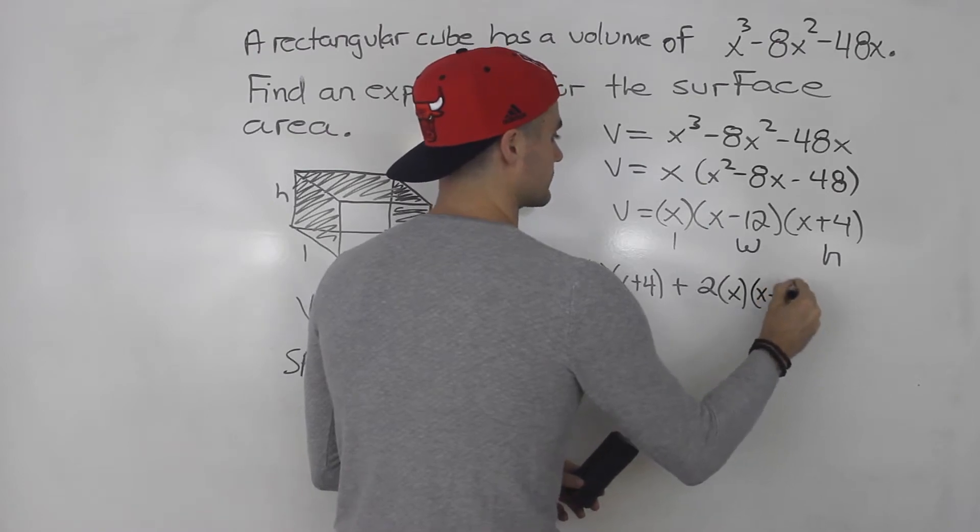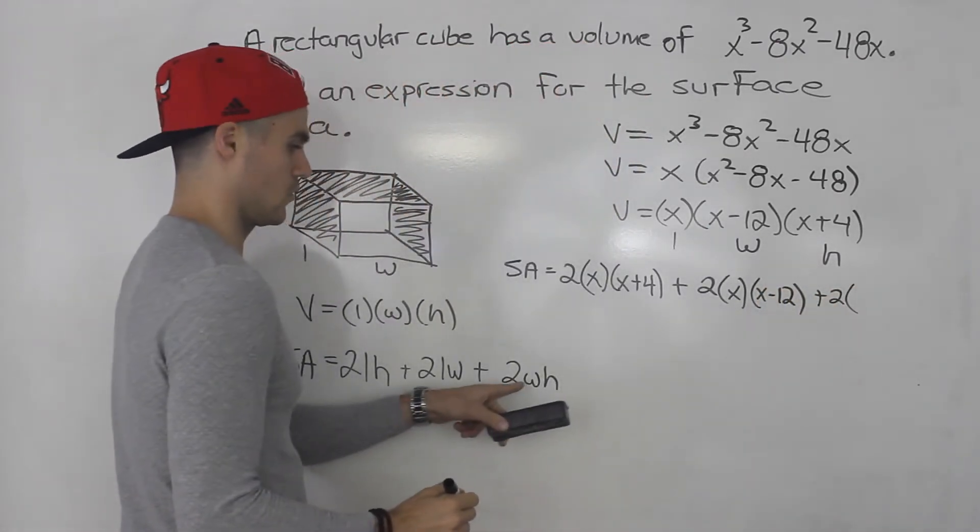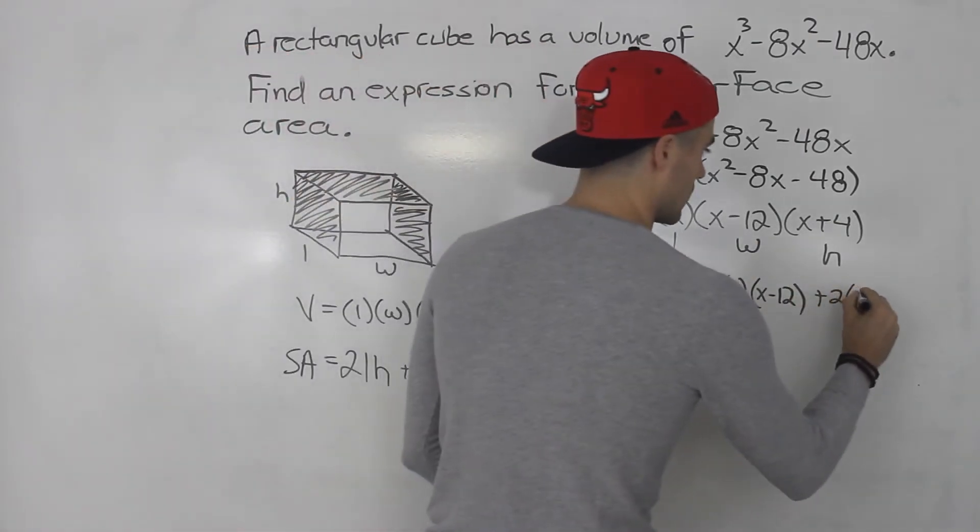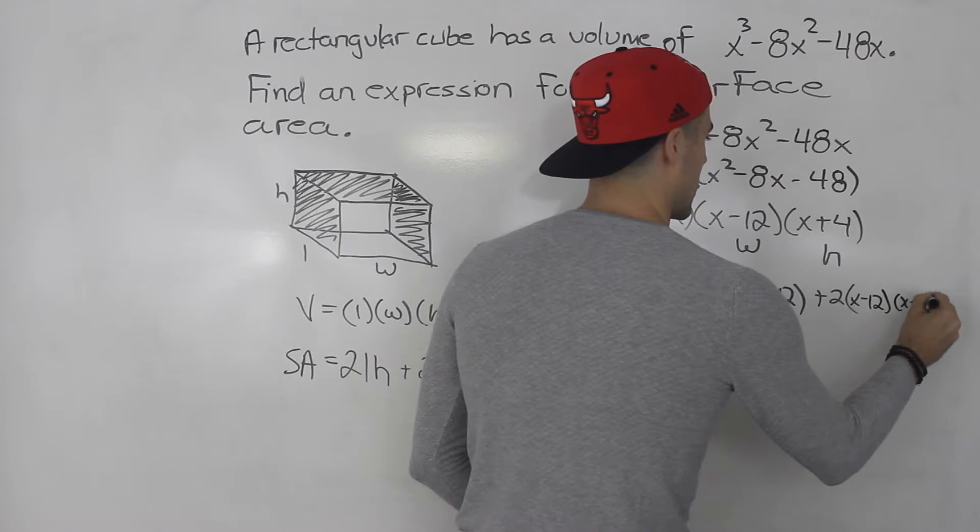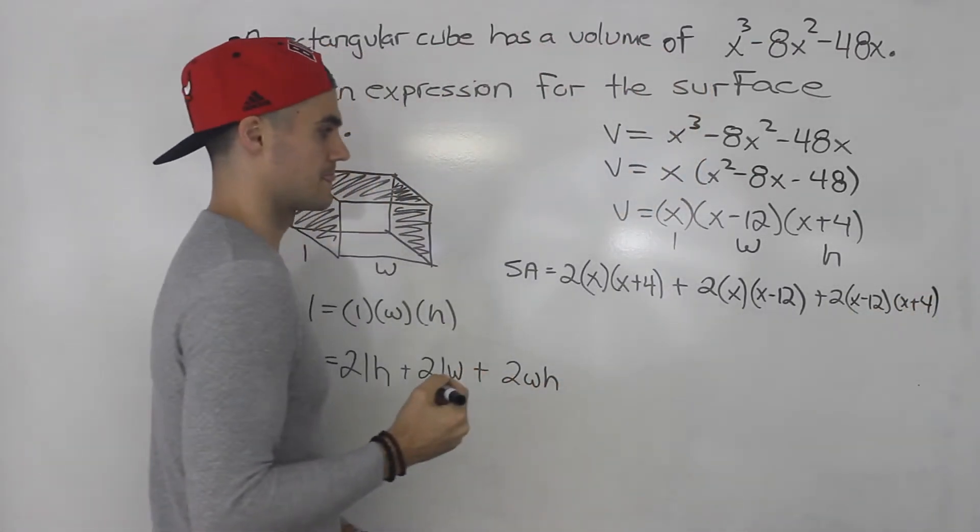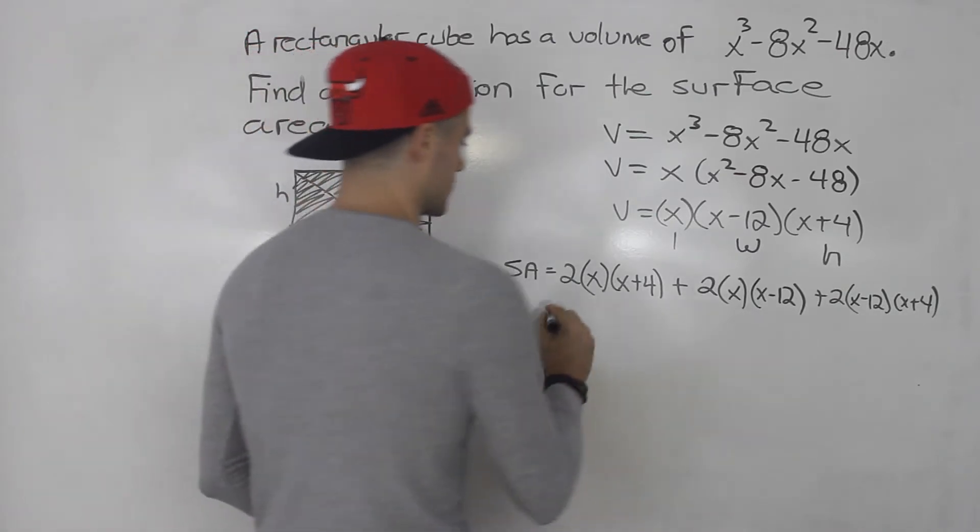Like that. And now we just have to expand all of this and then simplify all the like terms. So x minus 12 times x plus 4, like that. And now we just have to expand all of this and then simplify all the like terms.